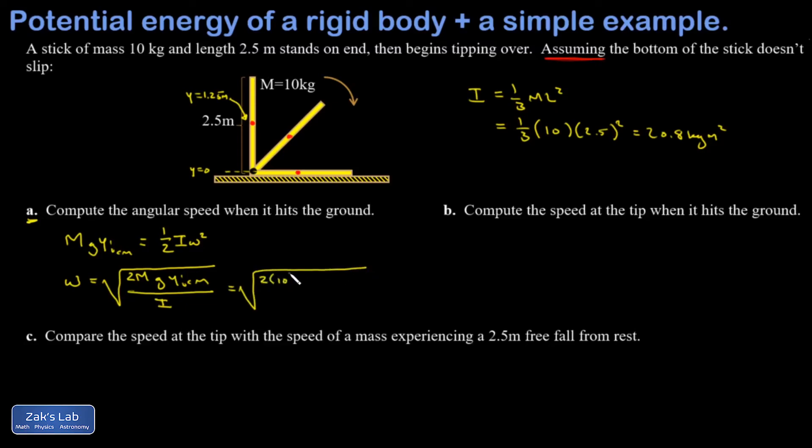2 times a mass of 10 kilograms, 9.8 for G. Initial Y coordinate of the center of mass is 1.25. It's all divided by my moment of inertia, which I just computed as 20.8. And I'll get my final angular speed. And I get 3.43 radians per second when it hits the ground.